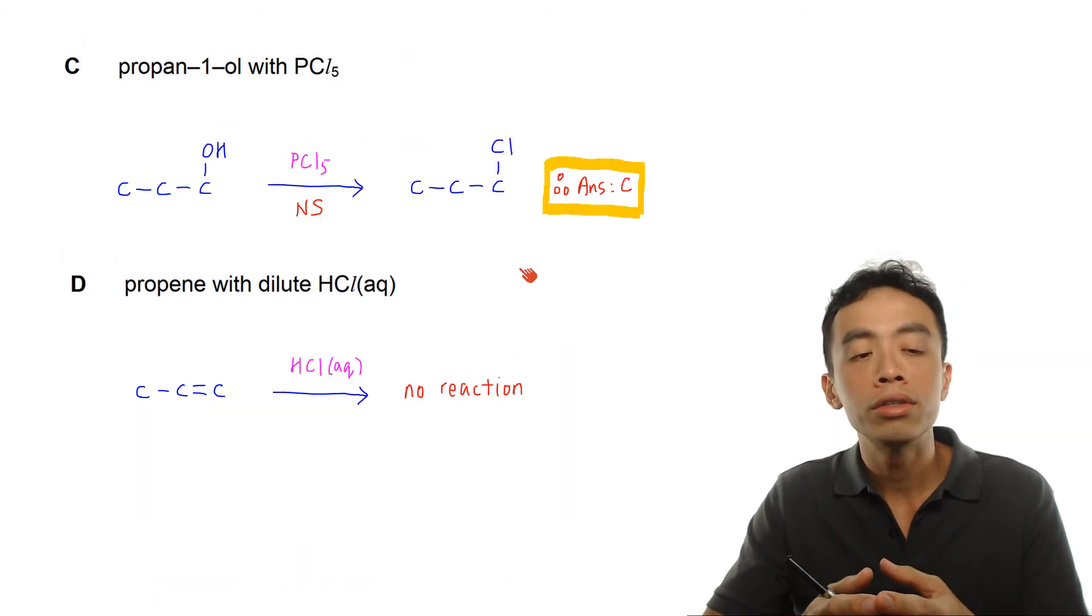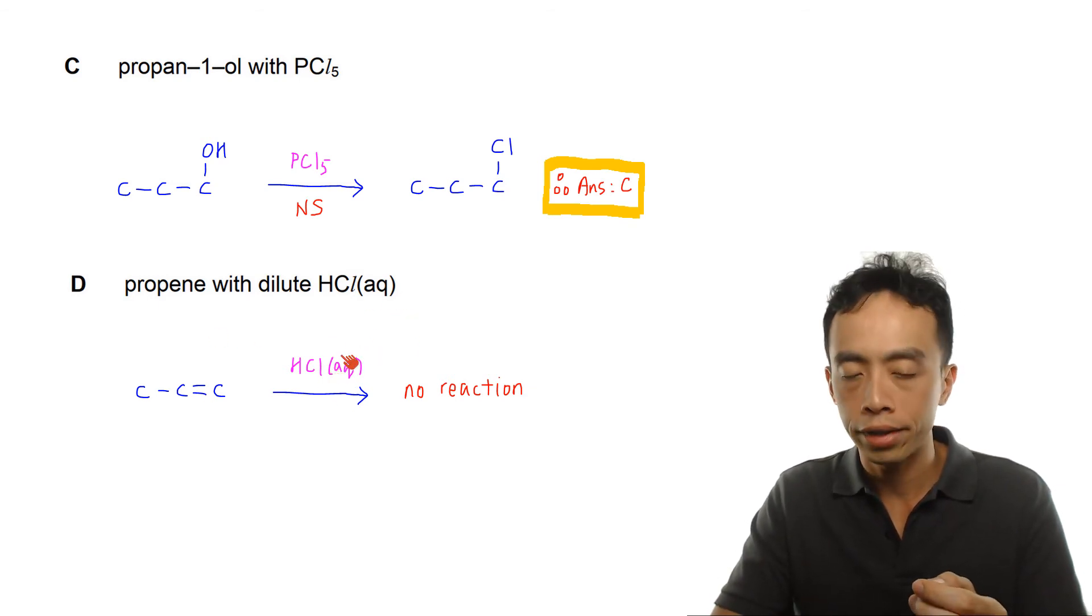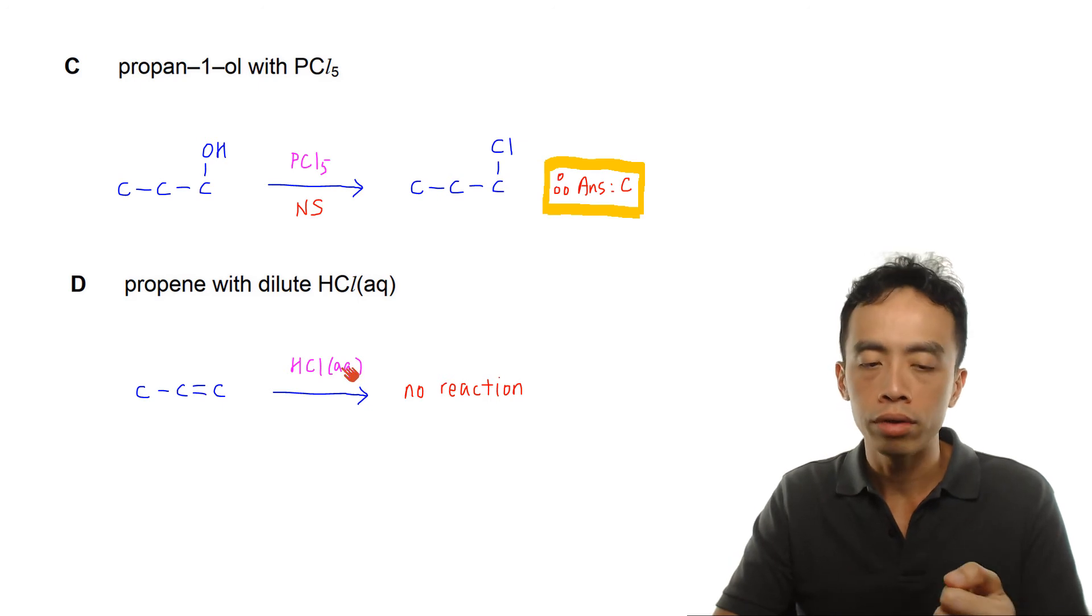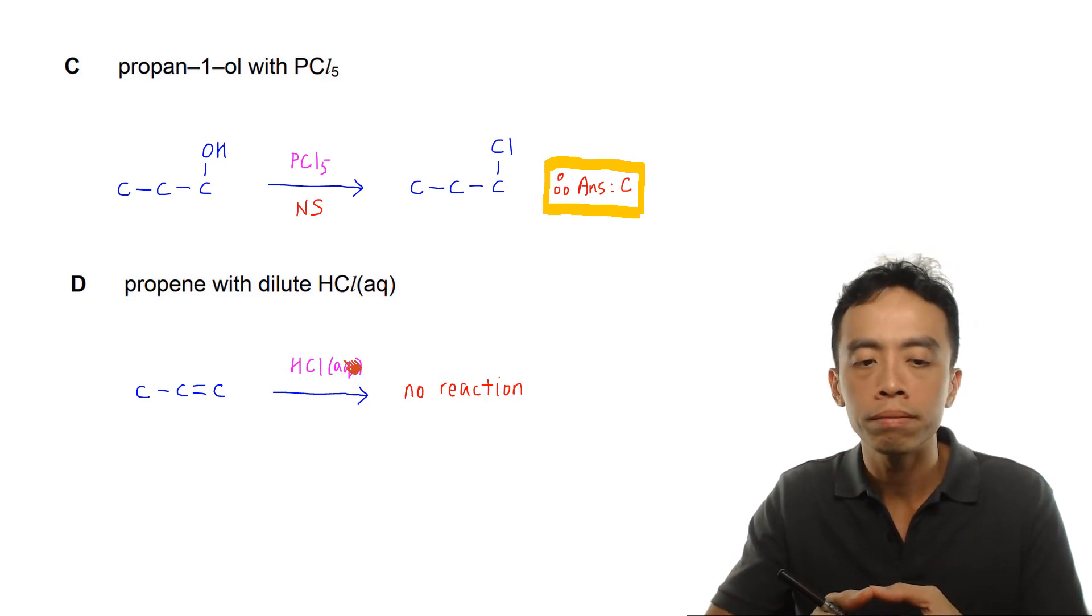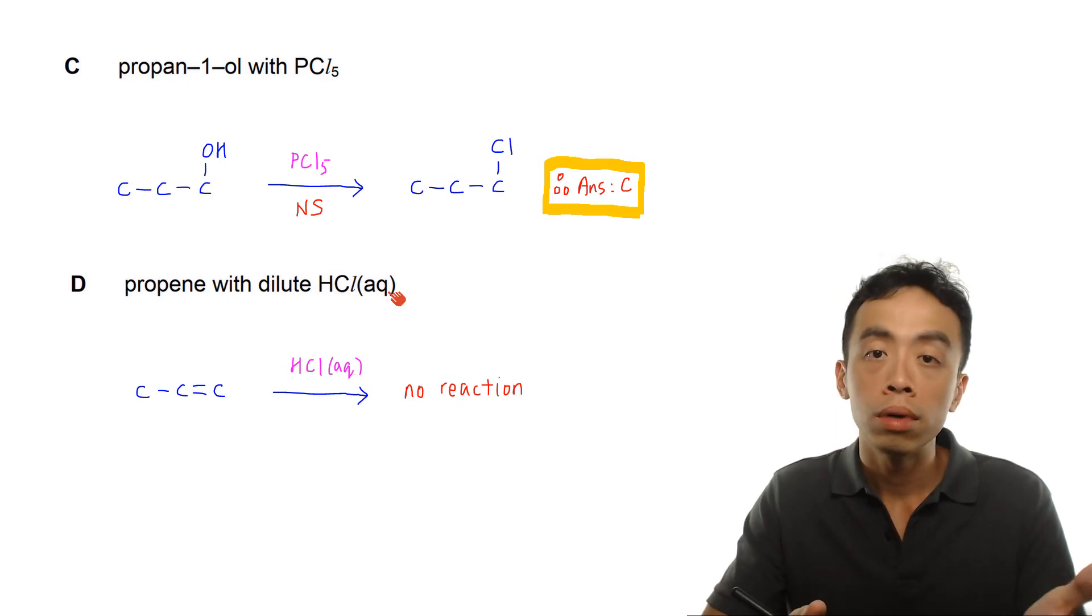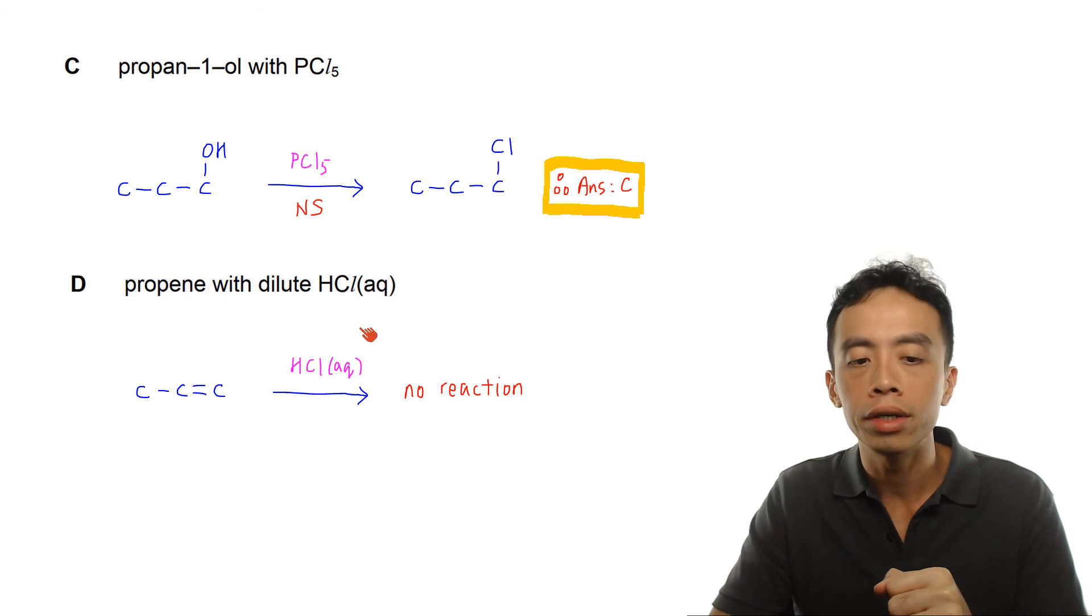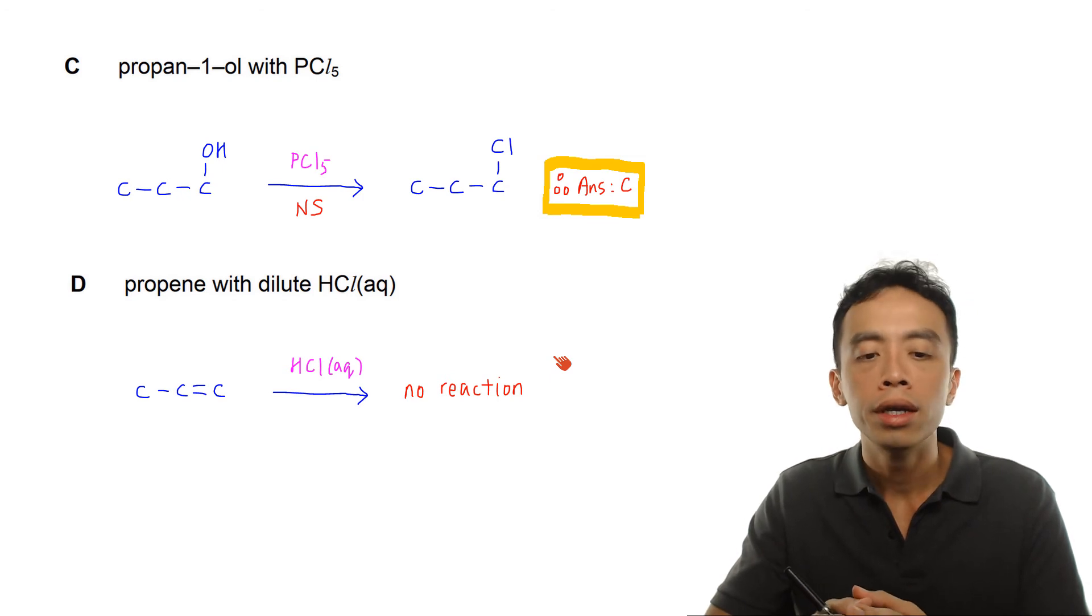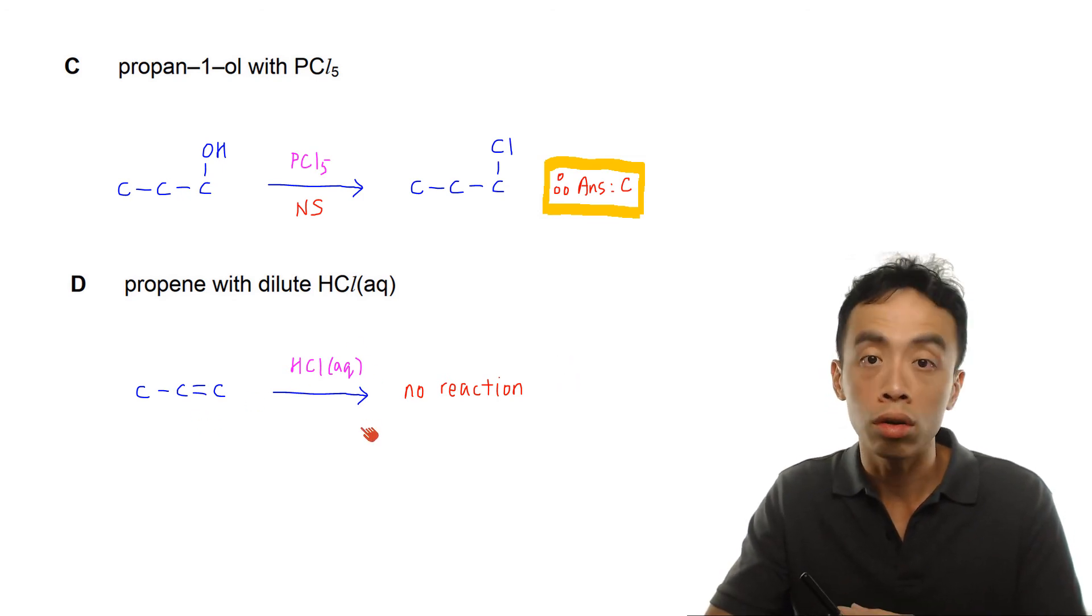Now finally just to run through option D, propene with dilute HCl aqueous. If I react alkene with HCl gas, that means pure HCl, then it is possible for me to have addition reaction involving HCl. But in this case, since I'm using dilute aqueous HCl, then there shouldn't be any reaction involving propene. So in this case, option D is also not the answer. There's no reaction involving alkene with these reagents and conditions.